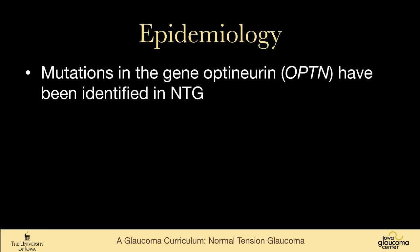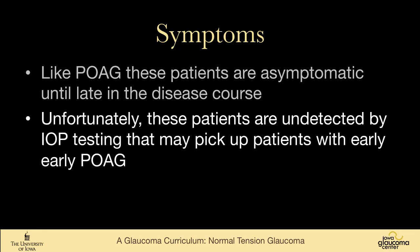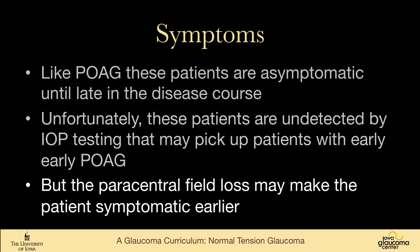While there's been a lot of work done trying to understand the molecular biology of normal tension glaucoma, there's really one gene that has had a lot of evidence — optineurin — which causes a small percentage of normal tension glaucoma. Like primary open angle glaucoma, these patients are asymptomatic until late in their disease course. They're not detected by intraocular pressure testing the way someone might be diagnosed with higher pressure glaucoma, so it's a little bit easier to miss people who have normal tension glaucoma.